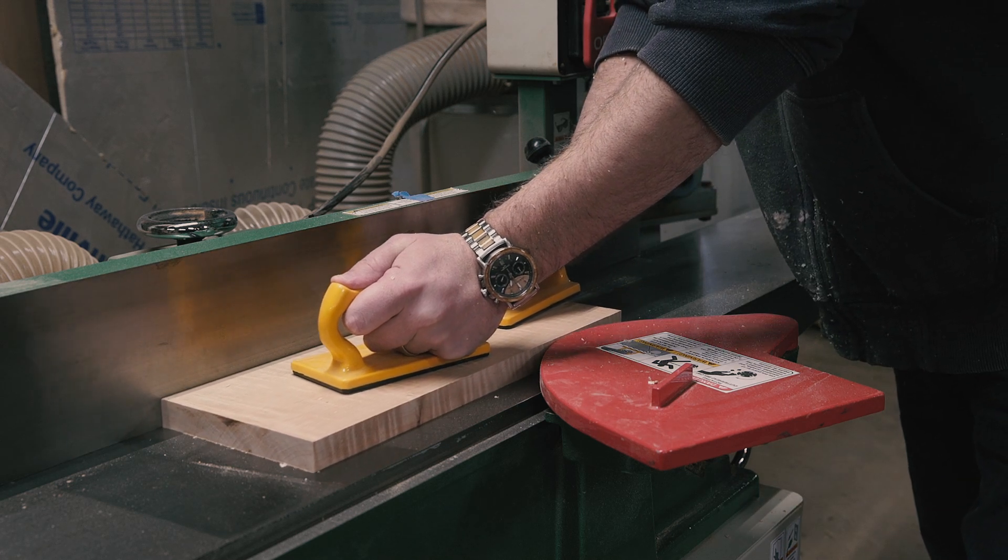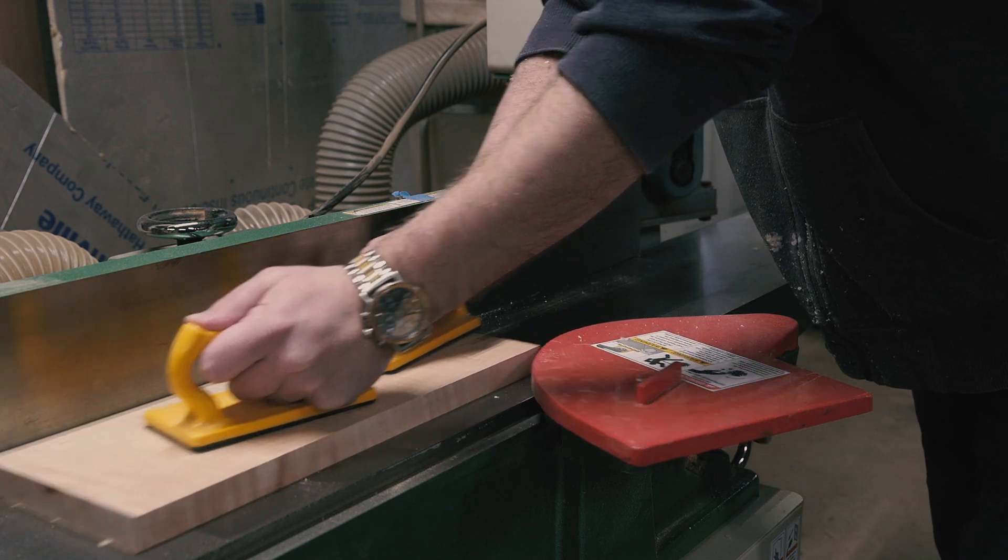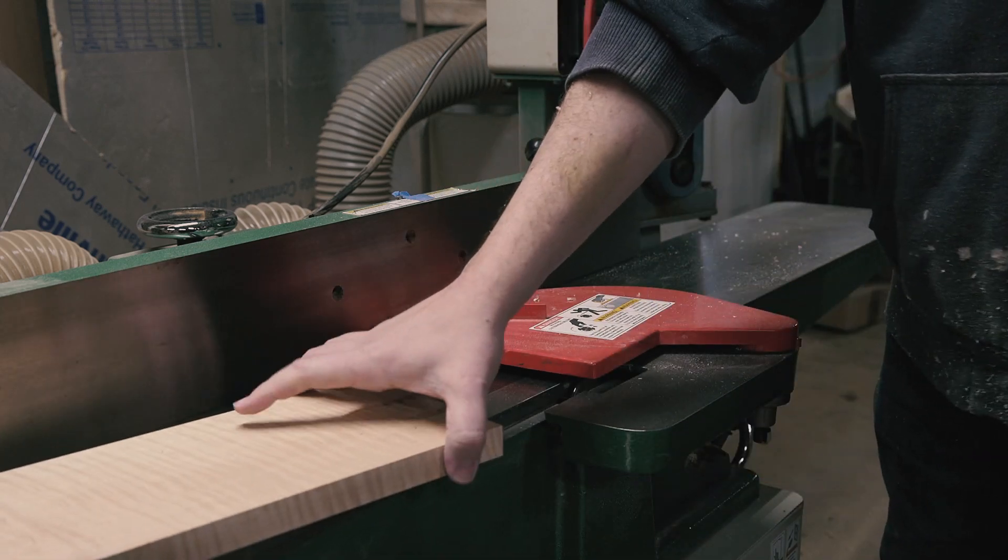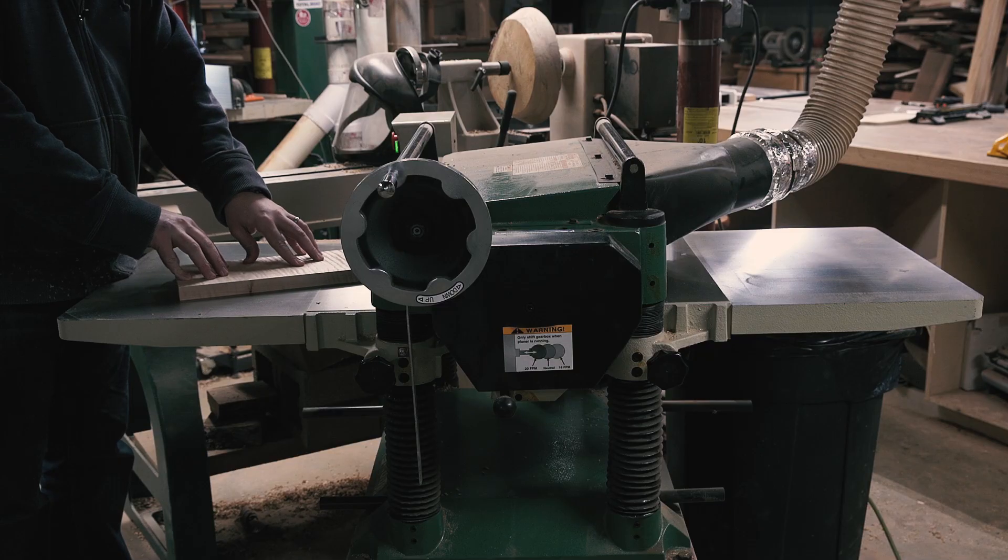It was relatively flat, so I jointed an edge at the jointer, then ripped it to width at the table saw, then face jointed and planed it to thickness to get my charcuterie board blank.